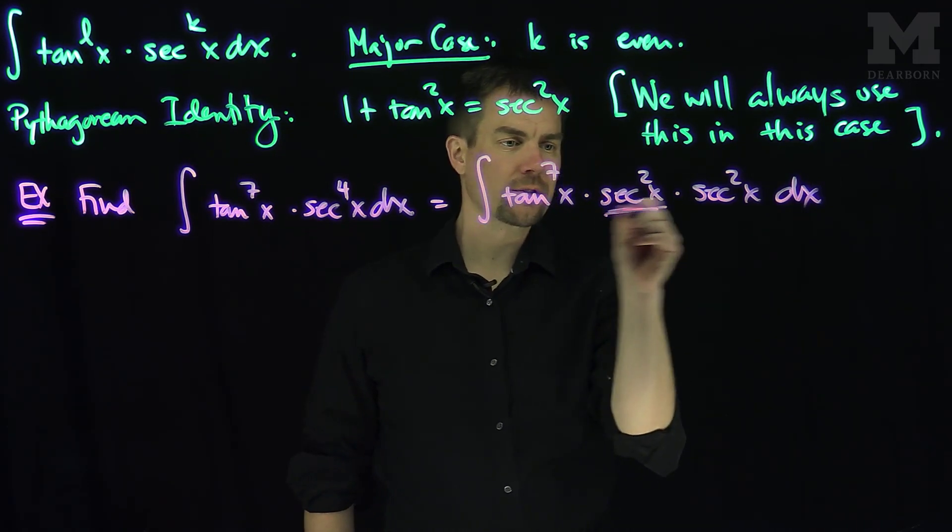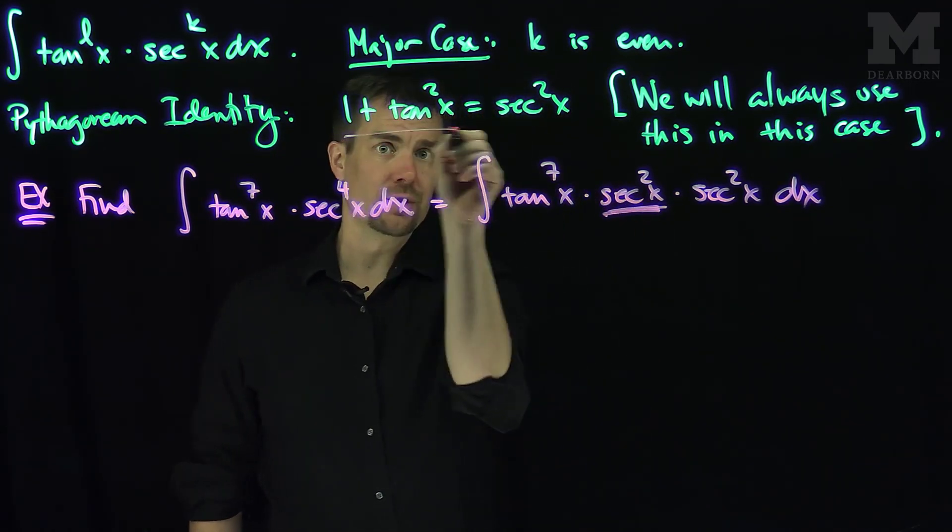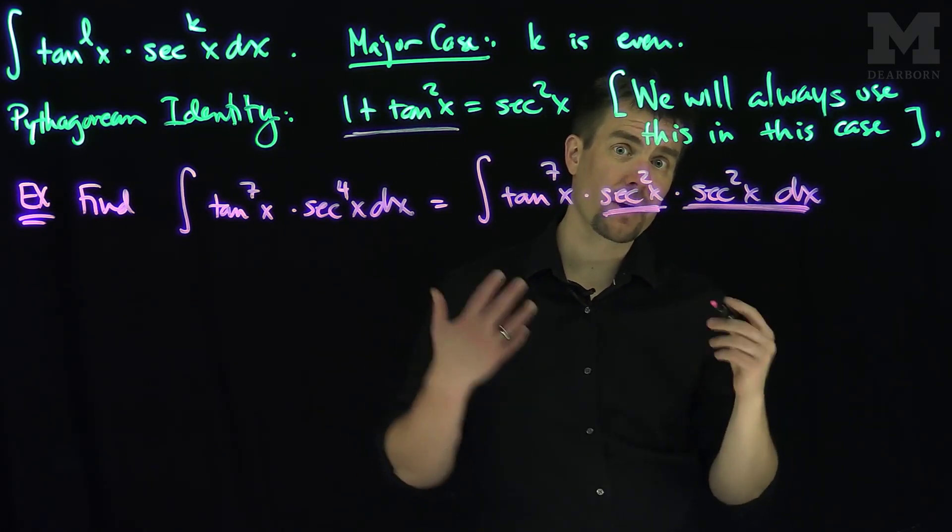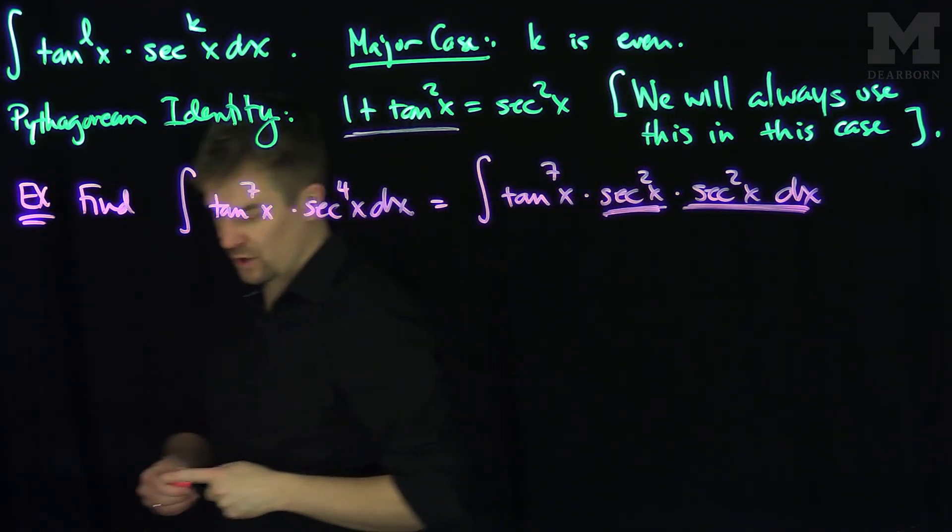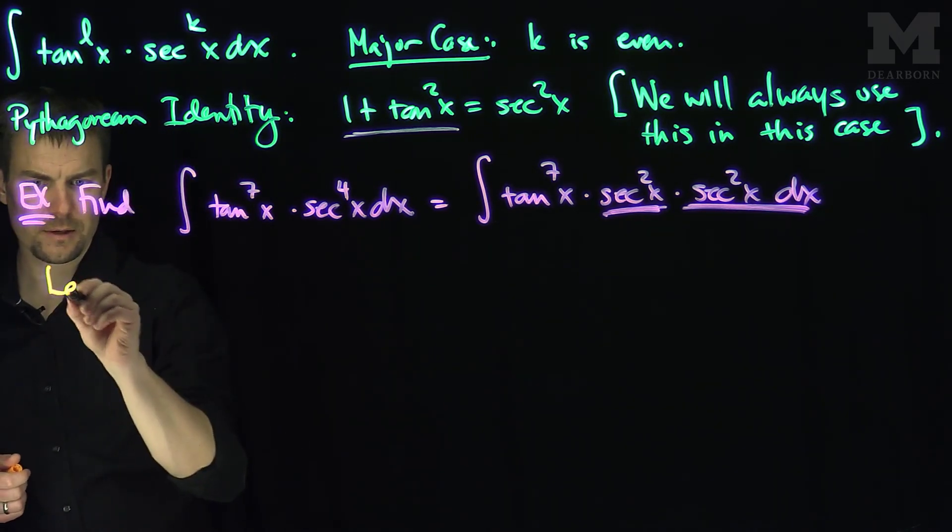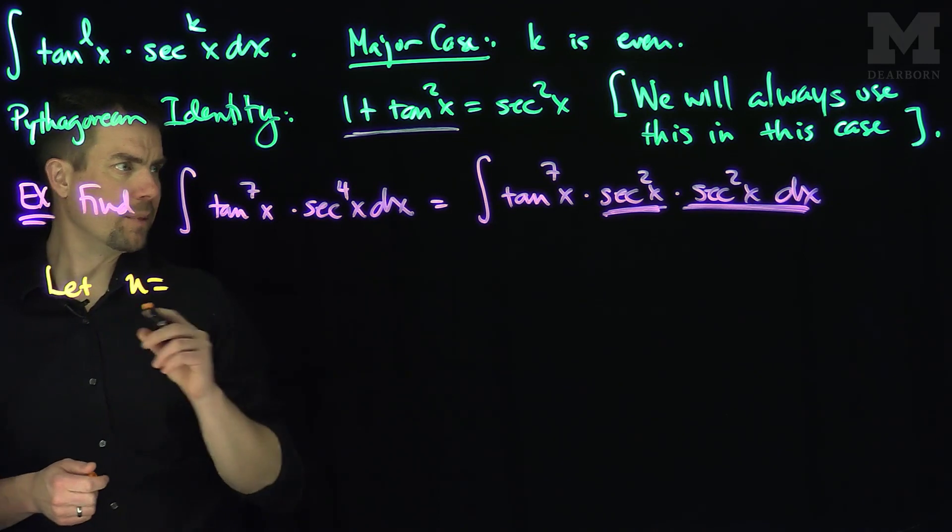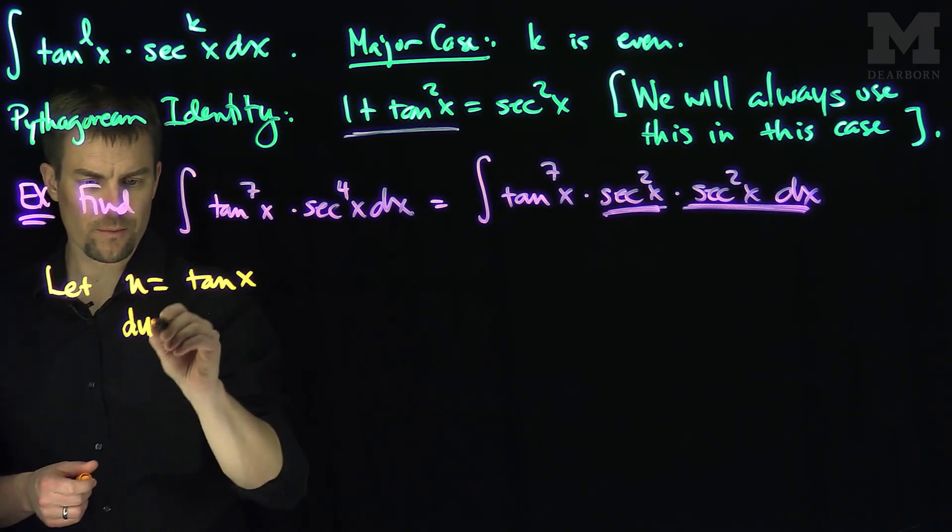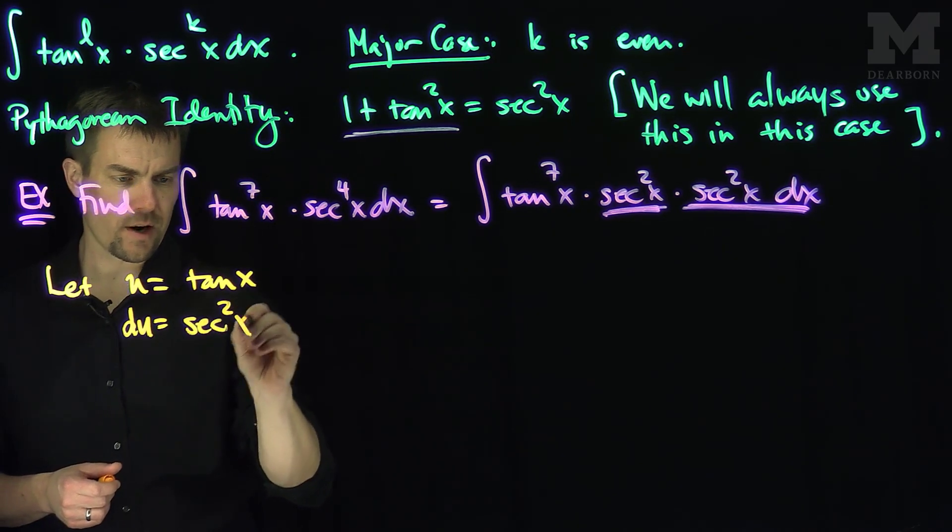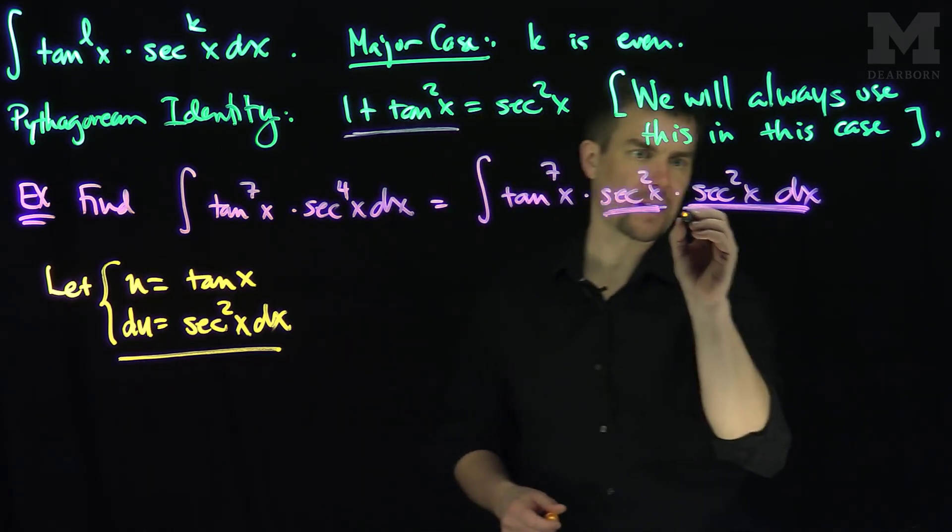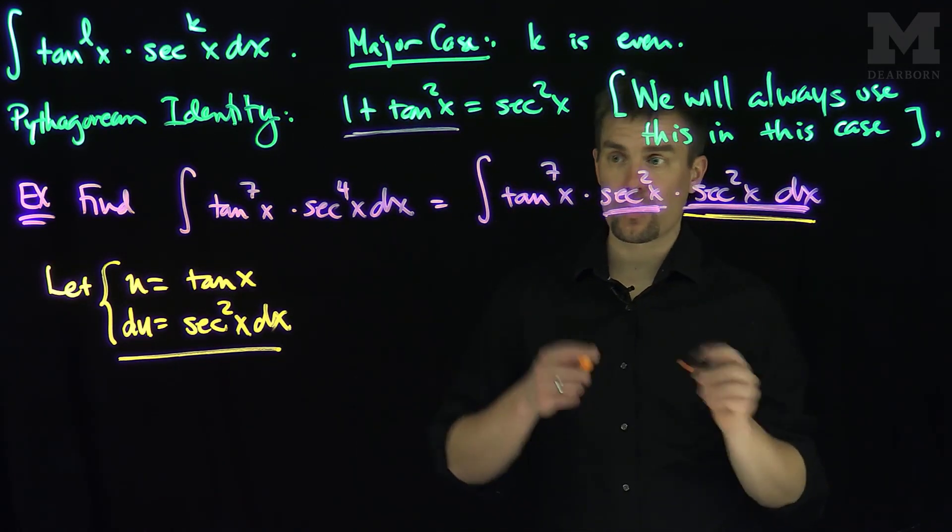I'll change this first secant squared into tangents. I'll leave this second secant squared with the dx for my u substitution. So what we're going to do here is let u be the tangent of x, then du will be secant squared x dx. So that's going to be the substitution I'm going to shoot for because I see a secant squared x dx. That will be my du.